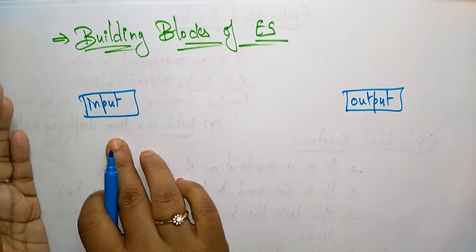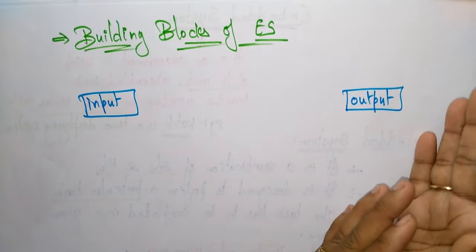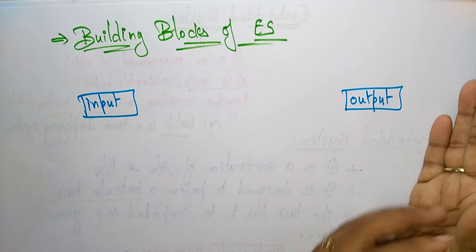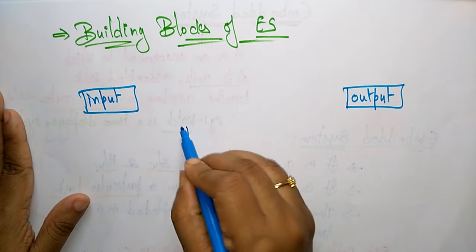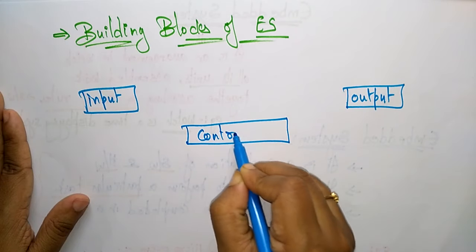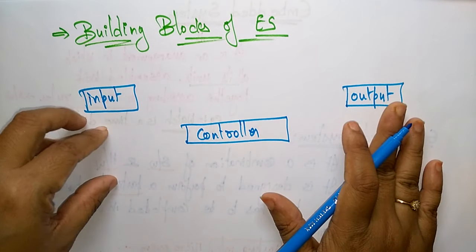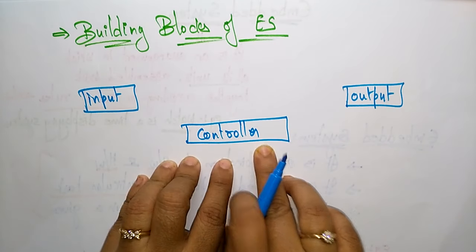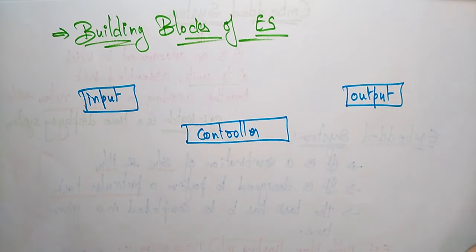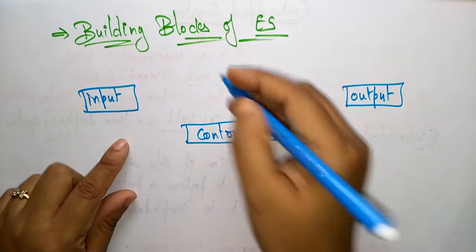For example, if you take the washing machine, you put the clothes in, it performs an operation, washes your clothes, and gives you drained clothes — that is the output. In between, you need a controller to perform the operation. The controller takes the input, completes the operation in the required time, and gives the output. It is performing a single task. To do all of this, you also need a power supply.